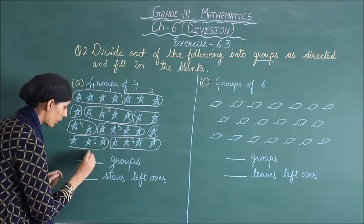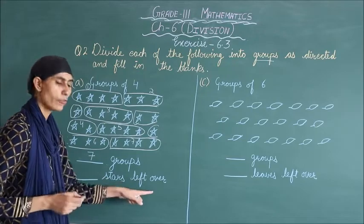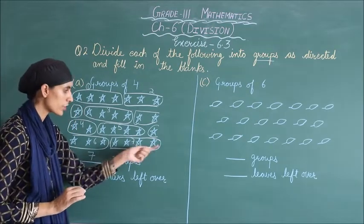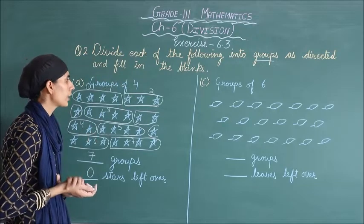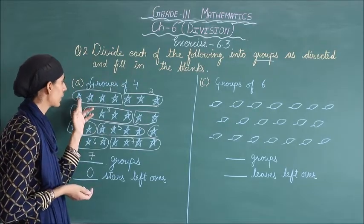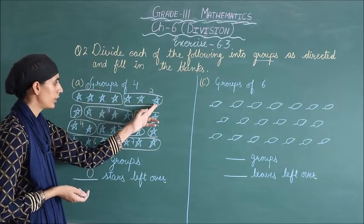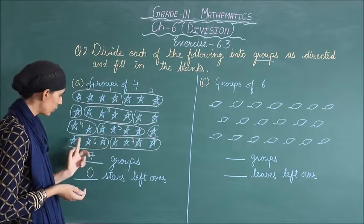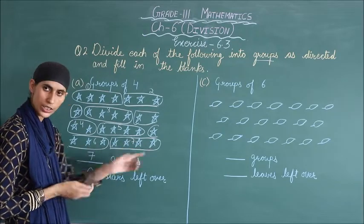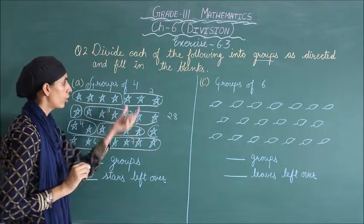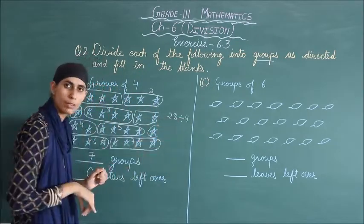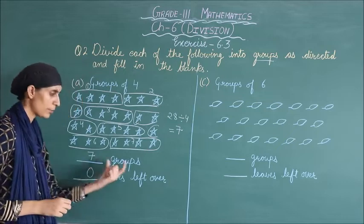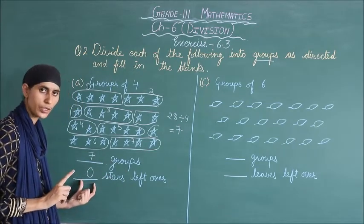Number of groups we are having: 7. Stars left over — koi star left over hai? Nahi baca hai na. To yahan par hum likhenge 0, kyunki koi star nahi baca. Total stars kitne hain? Counting karo: 28. Aur group kitne ka banaya? 4 ka — divided by 4. 4 ki table mein 28 kahan aata hai? 7 times mein. Isliye 7 groups bane hain aur stars left over 0.